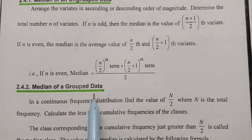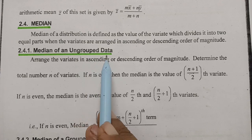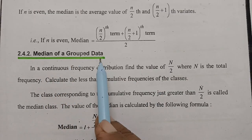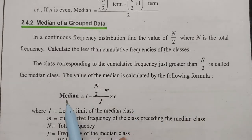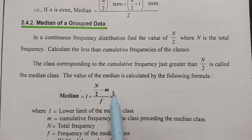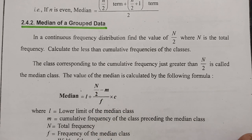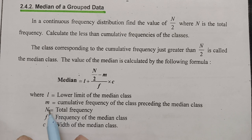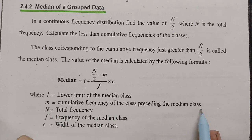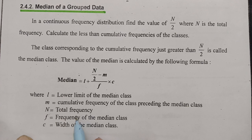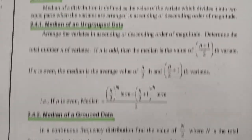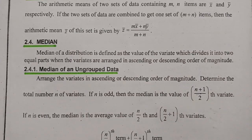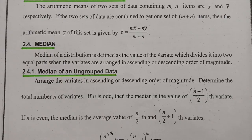For the median of grouped data: Median = L + [(N/2 − M) / F] × C, where L is the lower limit of the median class, M is the cumulative frequency of the class preceding the median class, N is the total frequency, F is the frequency of the median class, and C is the width of the median class.